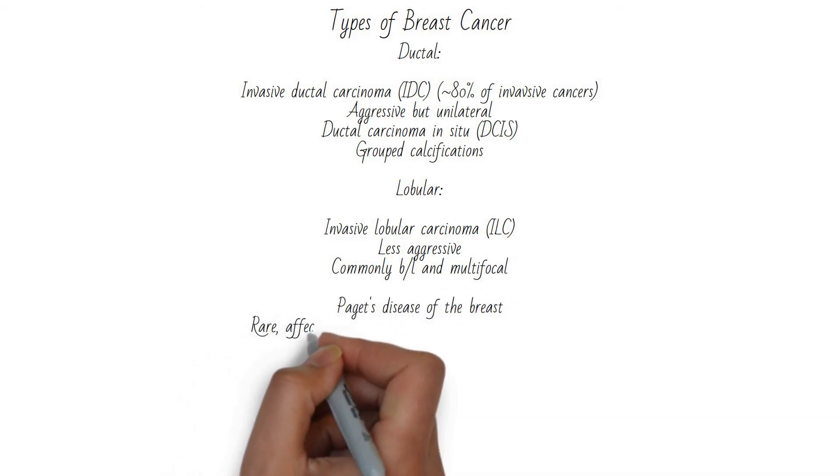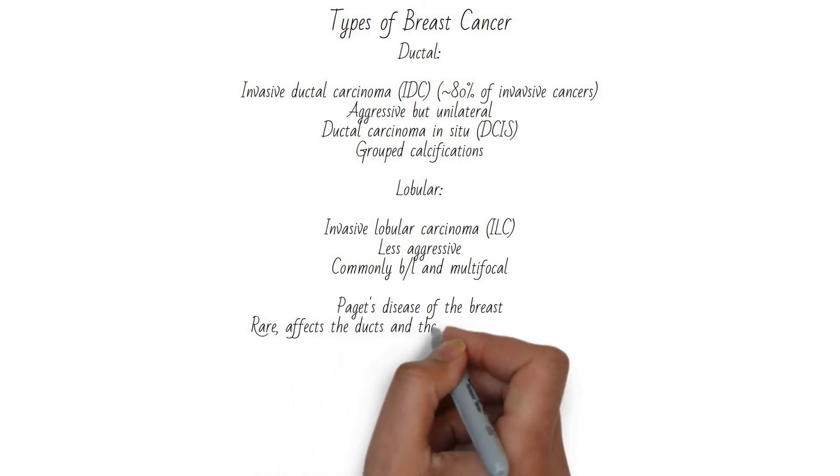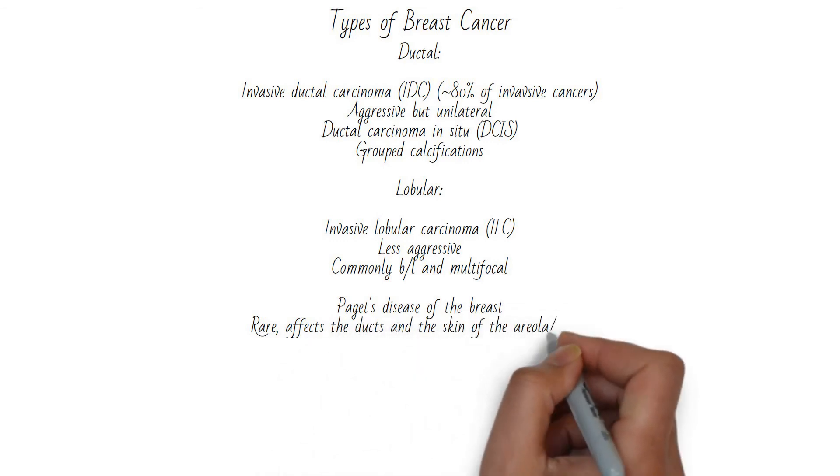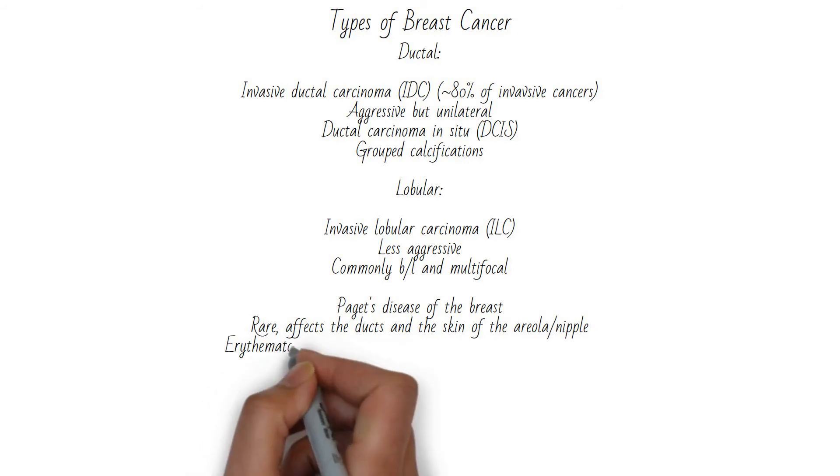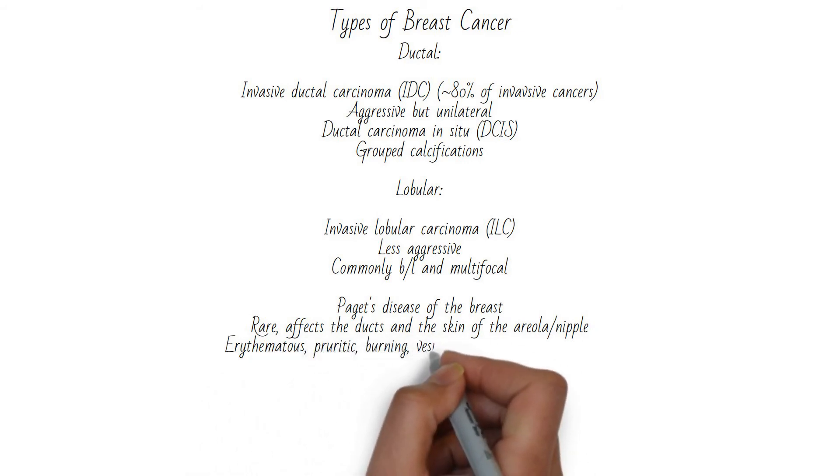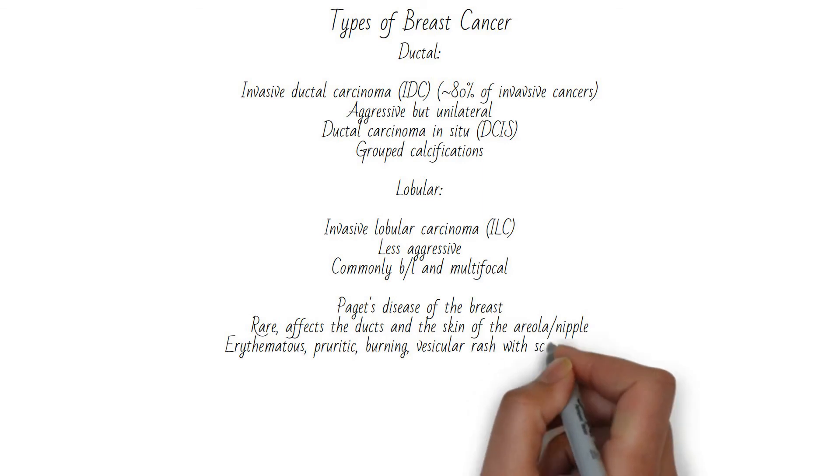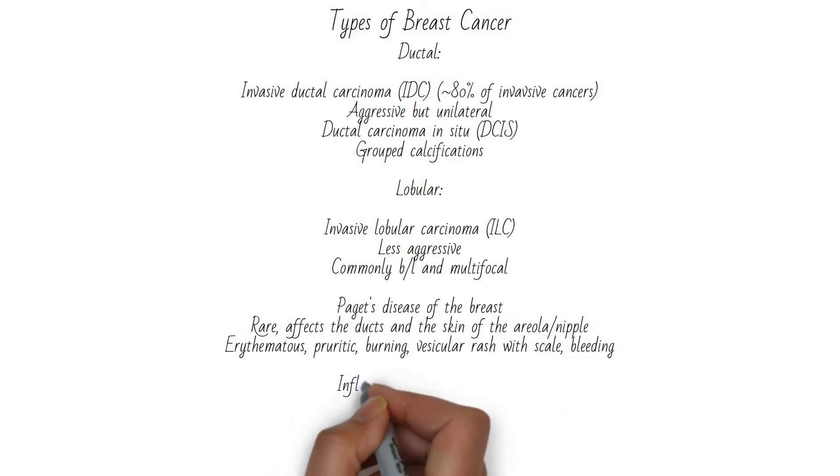A more rare type of cancer is Paget's disease of the breast. It is rare and affects the ducts and the skin of the areola and nipple. The patient generally reports an erythematous pruritic burning vesicular rash with scale and bleeding.